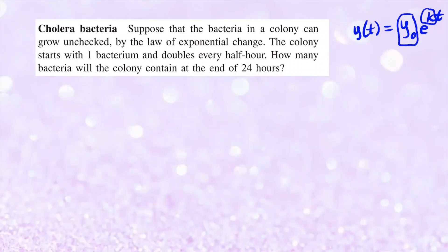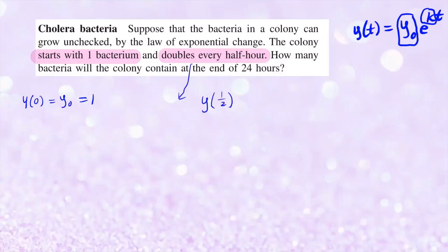The colony starts with one bacterium and doubles every half hour. From this, we know that our initial amount when t equals zero is one. It doubles every half hour, so when t equals one-half, we're going to have two times the initial amount — so two times one, which is two. Based on this information we can figure out k, and then we have the model. Our final goal is to find the number of bacteria at the end of 24 hours.